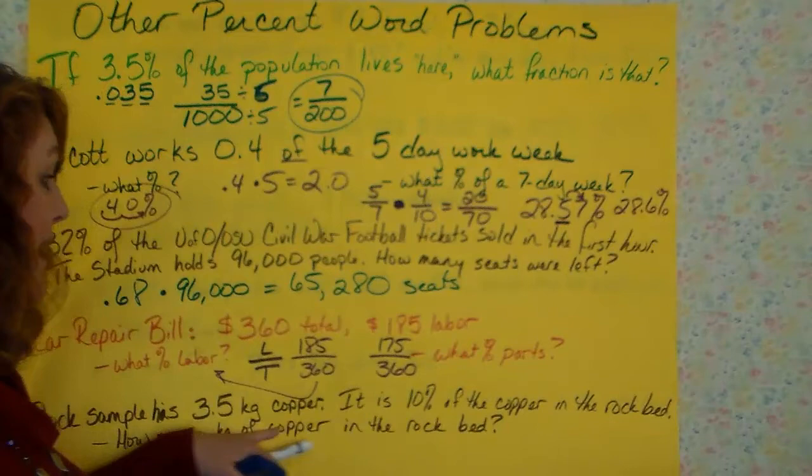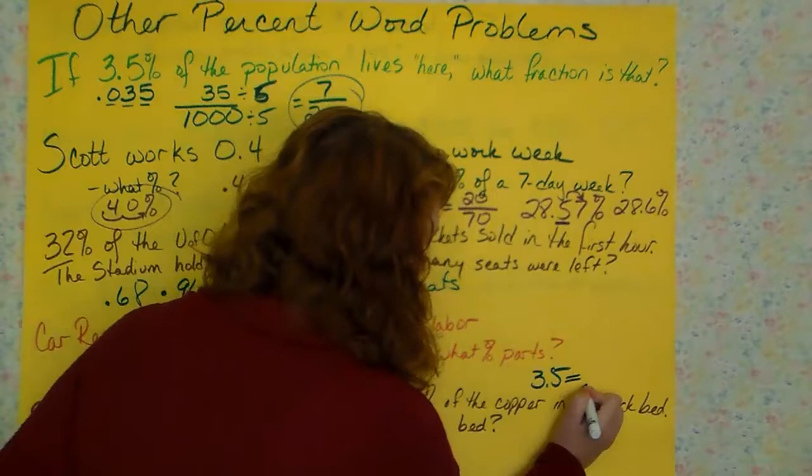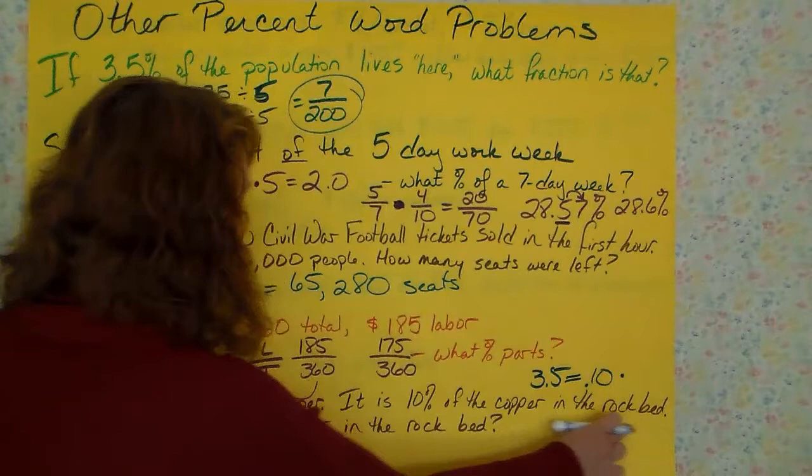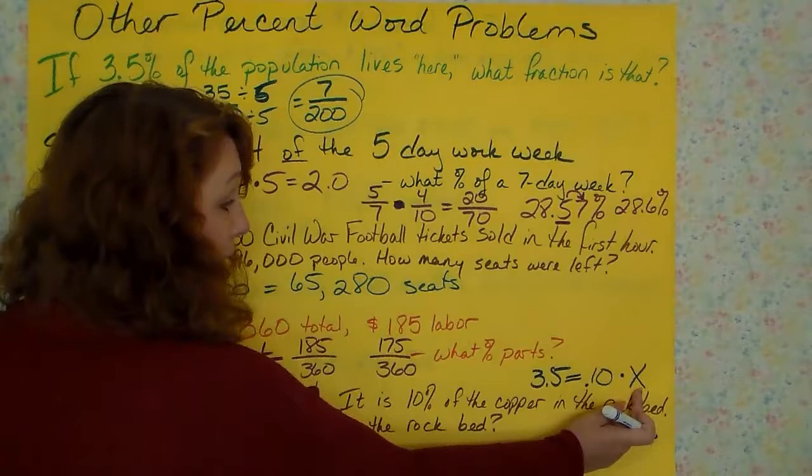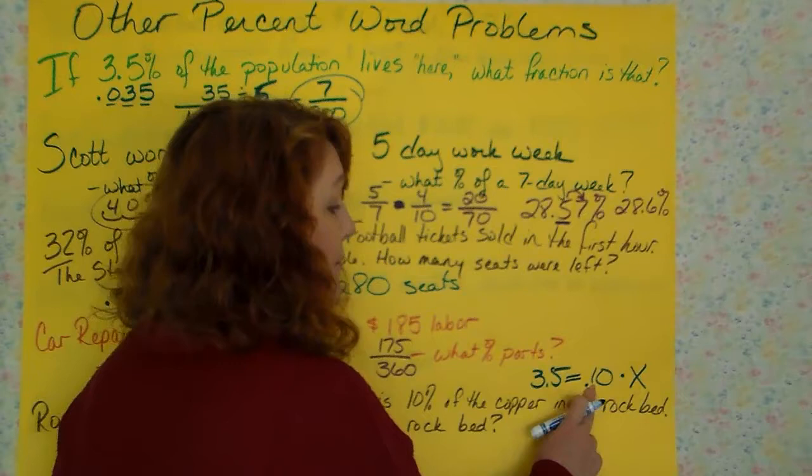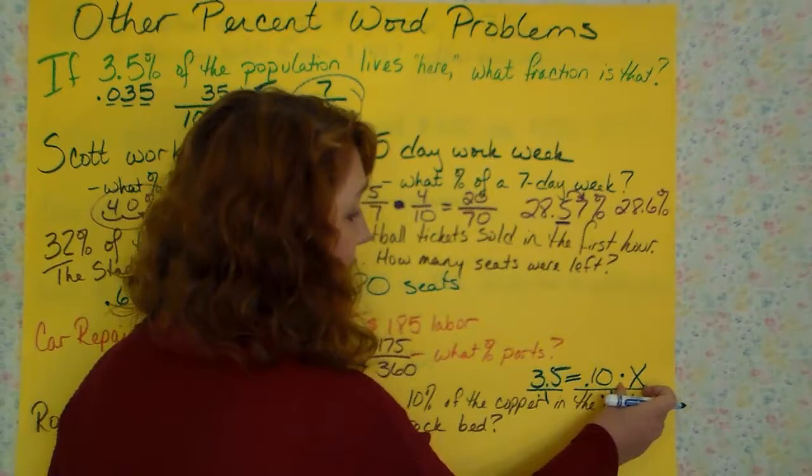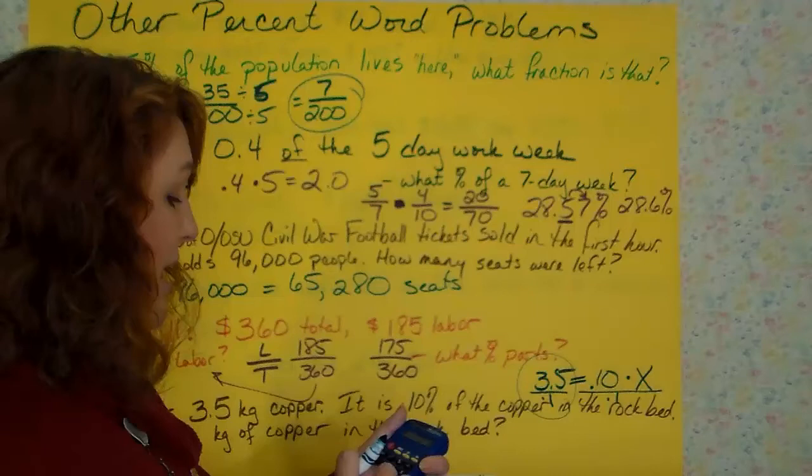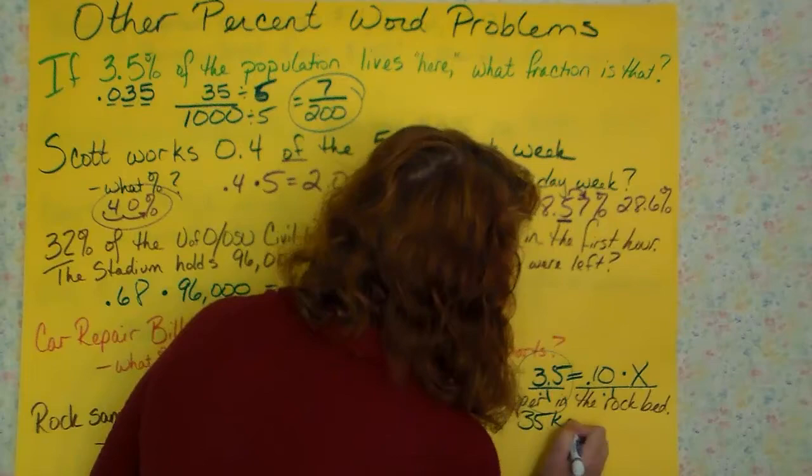Let's take that and make these words into math. 3.5 is 10%, we're going to change it to a decimal, of times the copper in the rock bed. And that's the part we don't know, how many kilograms of copper are in the rock bed. So this is going to be our x. So we've just translated this question into math. 3.5 equals 0.10 times x. I've got something multiplied to my variable. I have to divide by it, but I have to divide both sides so I can get my variable all by itself. So in my calculator, I say 3.5 divided by 0.1, and I get 35 kilograms of copper.